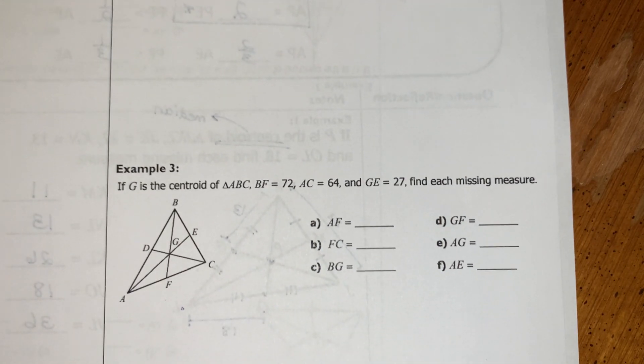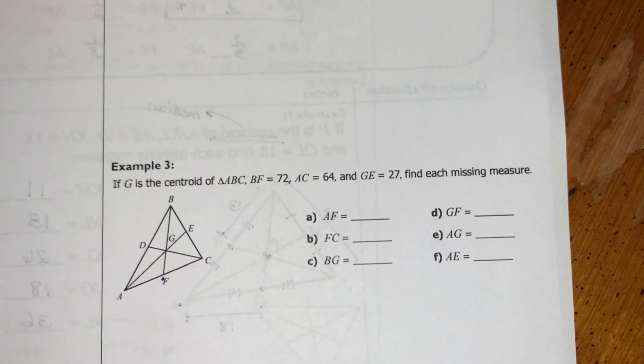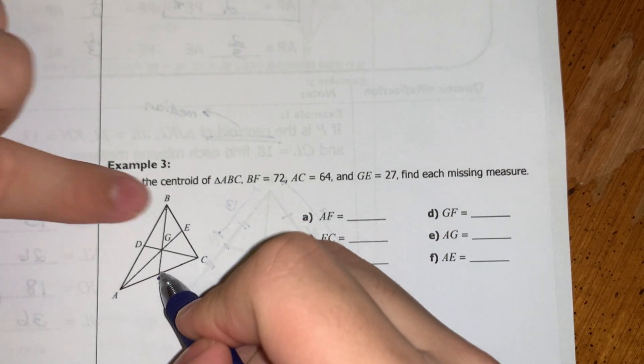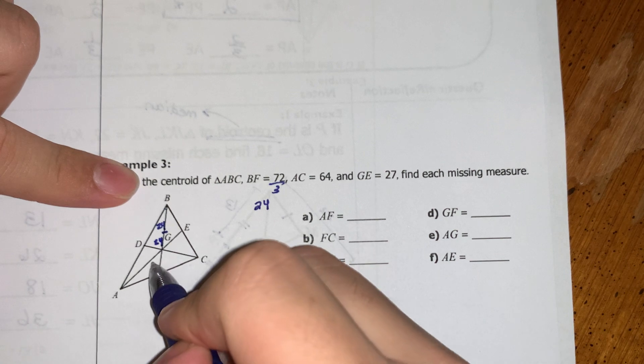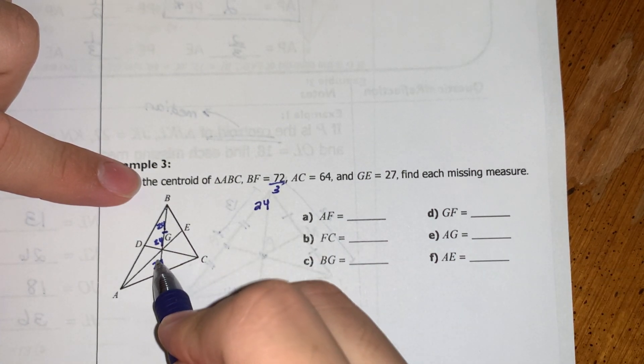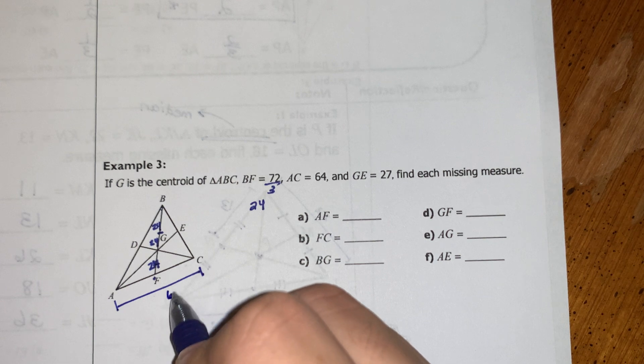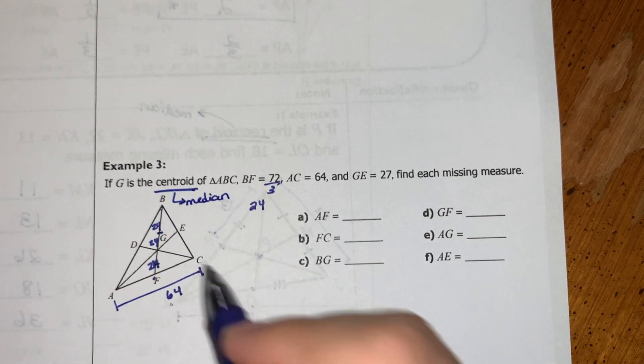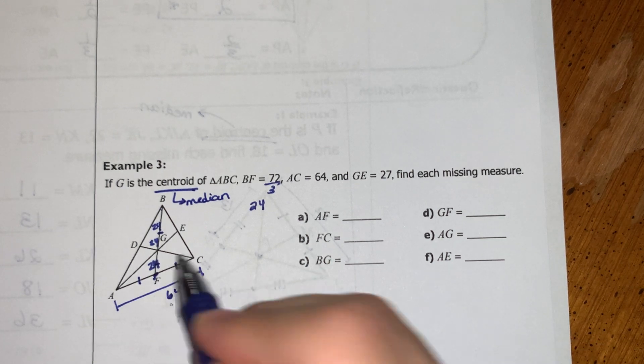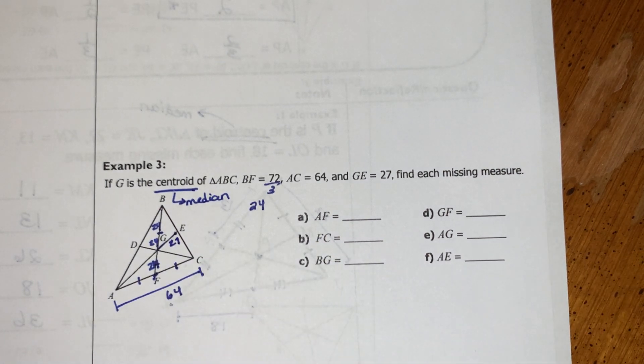Now, this last example, it's kind of putting it all together. It says if G is the centroid of triangle ABC and BF, so this entire length is 72. I'm just going to work with that. If I know that the entire length is 72, I can break that into three equal parts. So 72 divided by three is 24. So I'll put 24 there, 24 there, and 24 there. And then they say that AC, so now they gave us the length of a side, AC is 64. So again, if I'm dealing with a centroid, I always have to remember that that's the medians. So if this is the median, I can break this pretty much the same there and there. And then GE, so they're saying that this right here is 27.